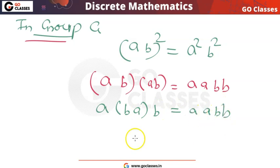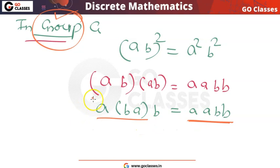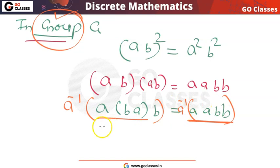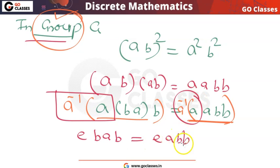Applying the associative property and multiplying by a⁻¹ on the left on both sides: on the left side, a⁻¹·a gives the identity element e. Similarly on the right side, a⁻¹·a gives the identity element e. So after applying this and using the fact that the identity element does not affect the operation, we obtain bab = abb.